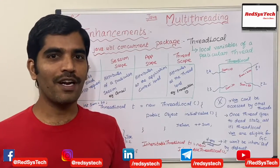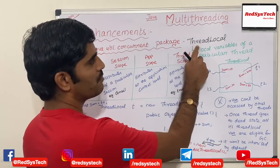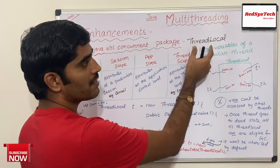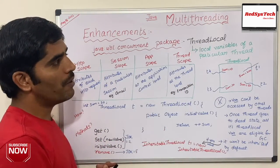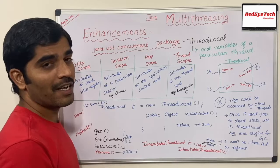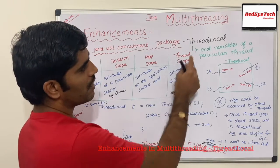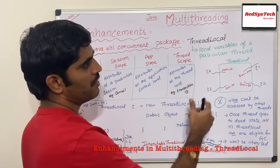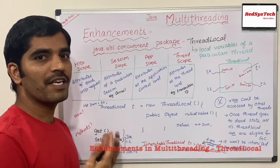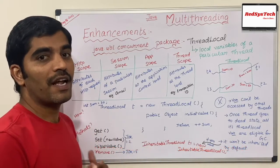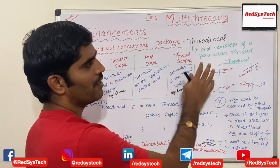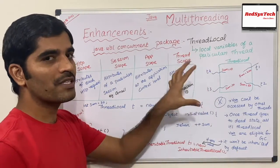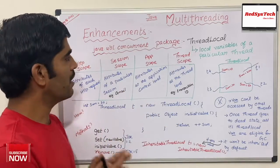ThreadLocal is a class in Java developed by the Oracle development team. It has existed since JDK 1.2. The purpose of this class is that ThreadLocal is nothing but local variables of a particular thread. If I want to define some variable specifically for a particular thread, I can define it with the help of ThreadLocal. When I say scope, it means it is only for that particular thread.